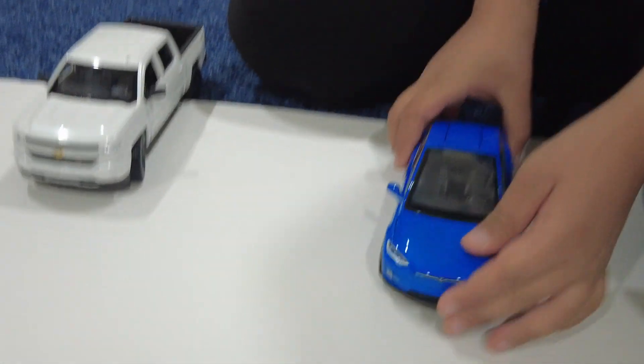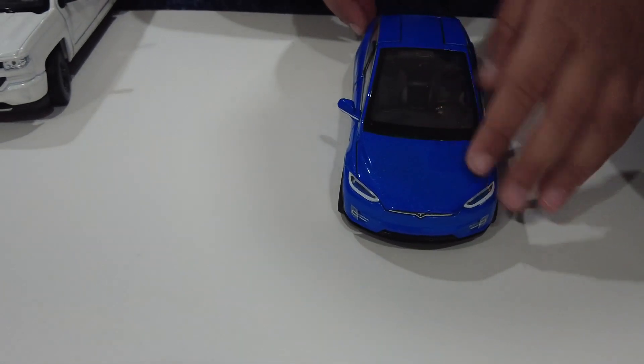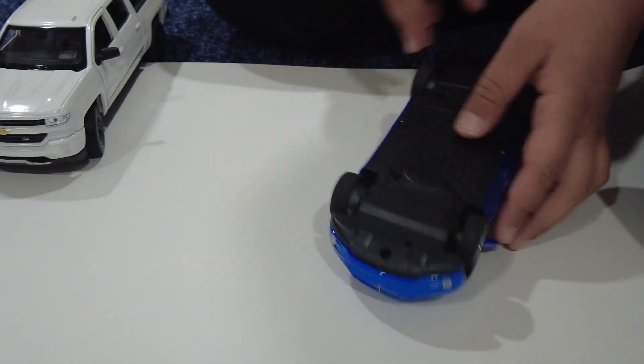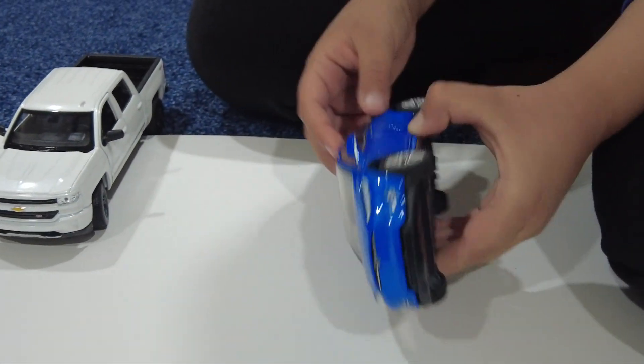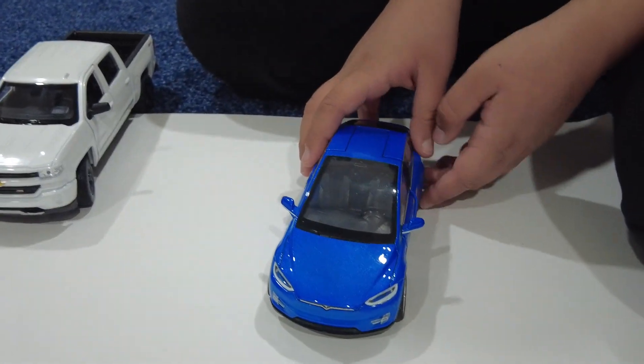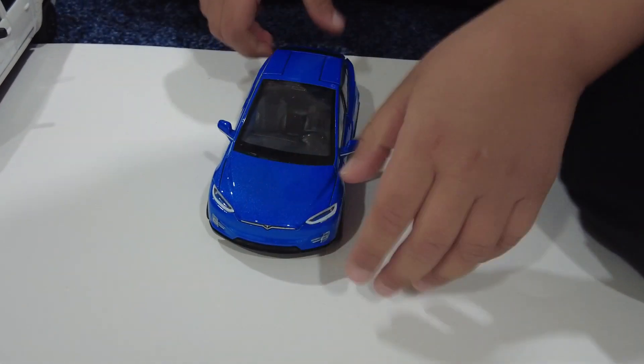And then another cool feature about this Tesla is that you could disable the sounds if you take it apart because there's screws on the back. You could take the Tesla off from the bottom and then you could disable the sounds. And we did that because it's super loud.